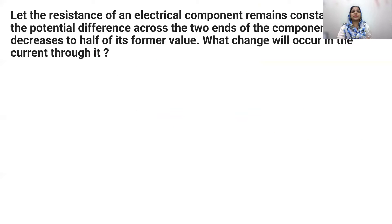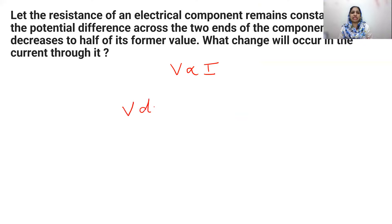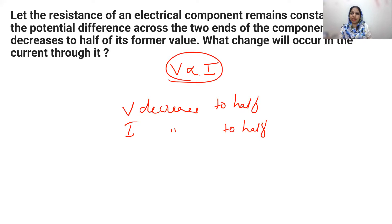Let the resistance of an electrical component remain constant, while the potential difference across the two ends decreases to half of its former value. What change will occur to the current through it? By Ohm's law, potential difference is directly proportional to current. When the potential difference decreases to half, the current will also decrease to half, since V is directly proportional to I.